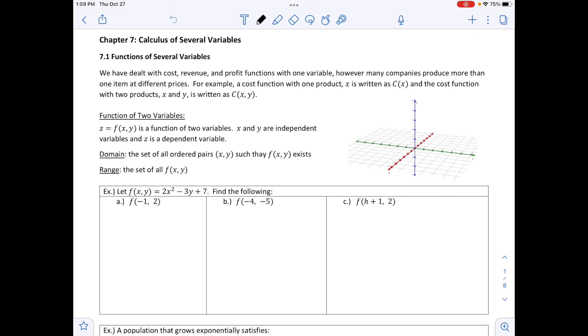For example, a cost function with one product X is written as C of X, and the cost function with two products X and Y will be written as C of X, Y. And we can have more than just X and Y products. We can have X, Y, Z, or additional variables in there for additional products. So a lot of useful information in here in regards to companies, because most companies and business applications, they're not just producing one single product.